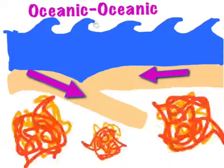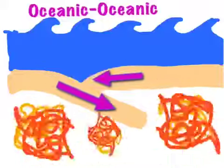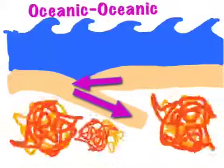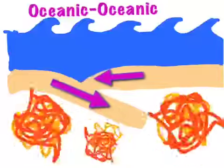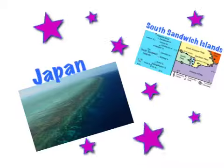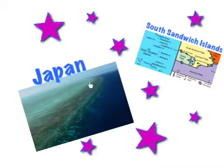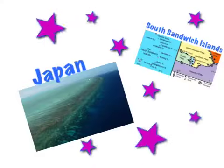Oceanic-Oceanic Subduction is when two oceanic plates collide. When they collide, the denser, heavier plate subducts under the other plate. This causes tsunamis, volcanoes, and earthquakes, and creates deep sea trenches. Geographic locations with oceanic-oceanic subduction include Japan and the South Sandwich Islands.